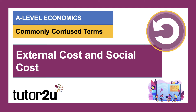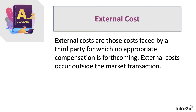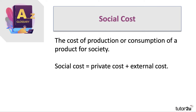External cost and social cost — again, this is extremely common and people often confuse the two terms. They're not the same. External costs are those costs faced by a third party for which no appropriate compensation is paid. Examples would be things like pollution from production and consumption. External costs are the negative externalities, the extra costs for third parties, and they occur outside the market transaction. Social cost is the cost of production or consumption of a product for society as a whole — think of it like the social supply curve. Social cost equals private cost plus external cost.